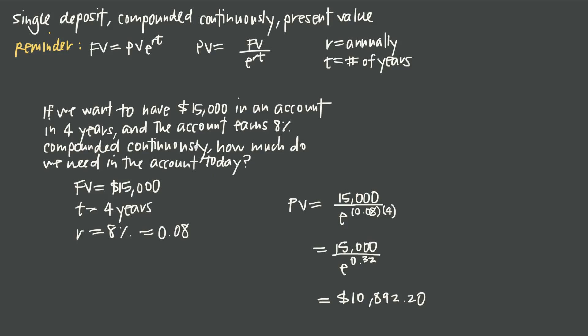And that's based on the fact that interest is compounded continuously and we're earning 8%. If we were earning a different percentage rate then this number would change, or if the time was different. But at 8% compounded continuously with four years, we need $10,892.20 today.